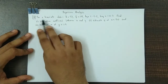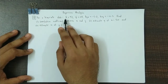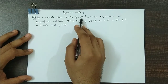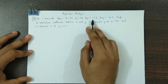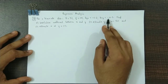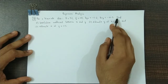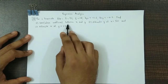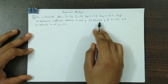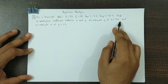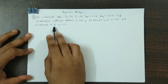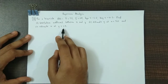The question is: for a bivariate data, x̄ is equal to 53, ȳ is equal to 28, byx is minus 1.2, bxy is minus 0.3. Find the correlation coefficient between x and y. Second, estimate y at x equal to 50, and estimate x at y equal to 25.